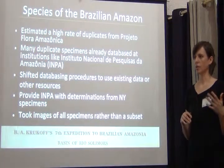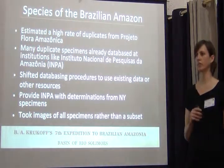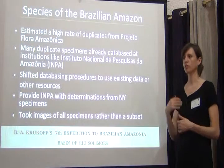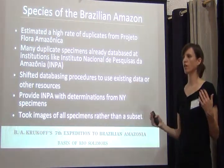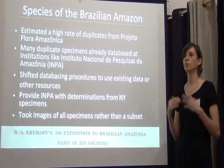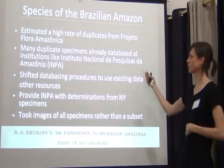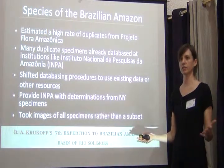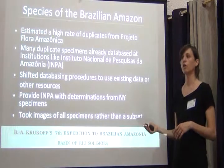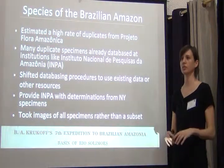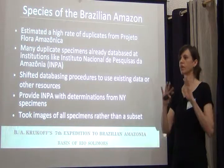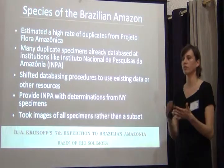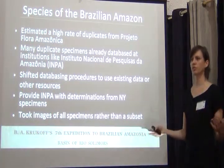Then we moved into the species of the Brazilian Amazon — this is our third funded project for Brazil, many years in. We weren't the only ones databasing, so we started talking to colleagues. A lot of other people in Brazil were databasing their specimens. The New York Botanical Garden was part of a big collecting project called Progetto Flora Amazonica, where tons of collectors were sent to Brazil and duplicates were distributed all over — in Brazil and multiple institutions in the US.